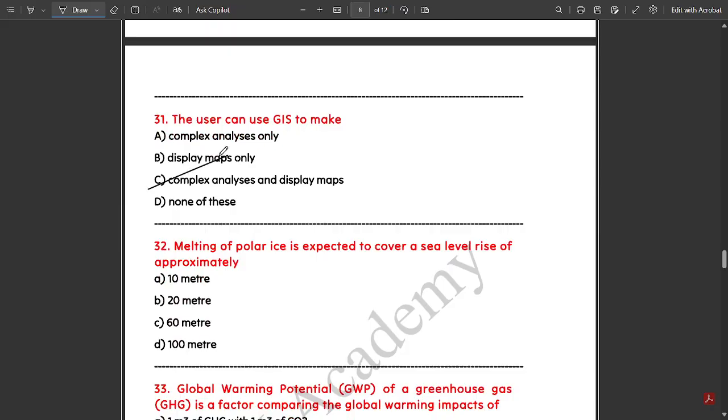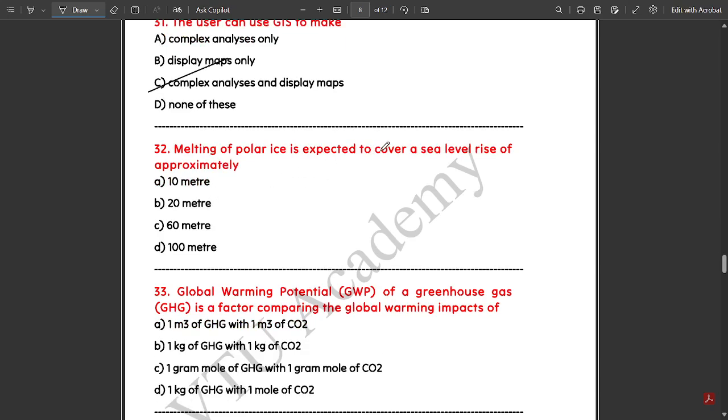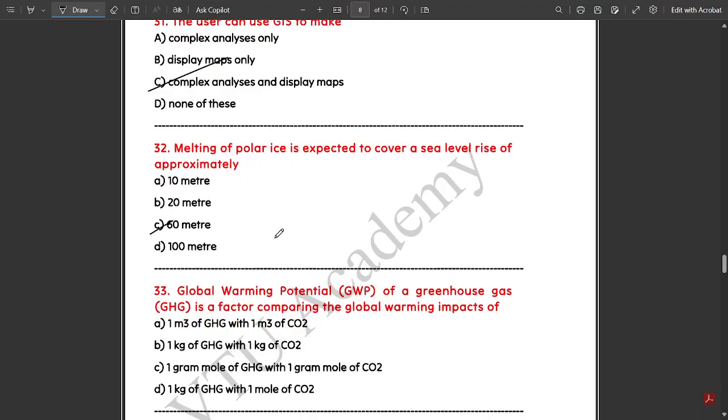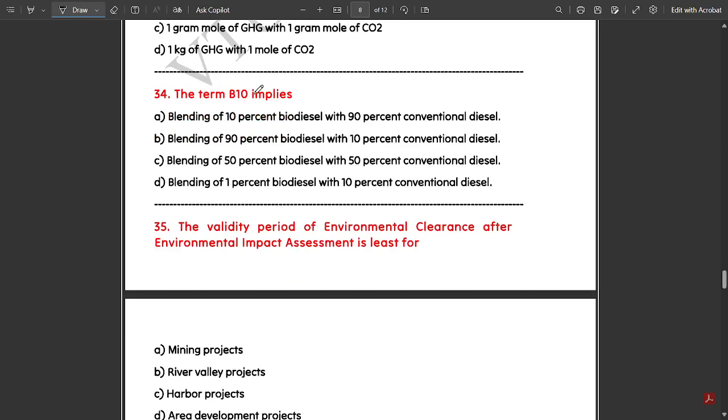The user can use GIS to make complex analysis and display maps. Melting of polar ice is expected to cause a sea level rise of approximately 60 meters. Global Warming Potential (GWP) of a greenhouse gas is a factor comparing the global warming impacts of 1 kg of GHG with 1 kg of CO2.